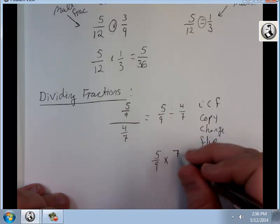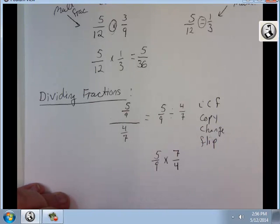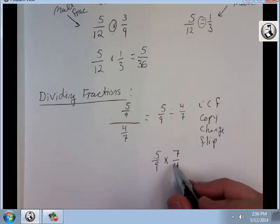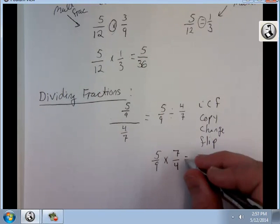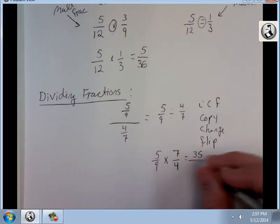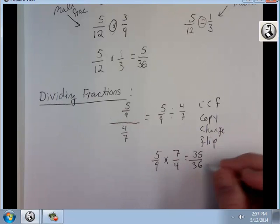Technically this is called multiplying by the reciprocal of the divisor. I'm okay with calling it copy change flip. Now this is going to be the same thing as up here. Top times top over bottom times bottom.